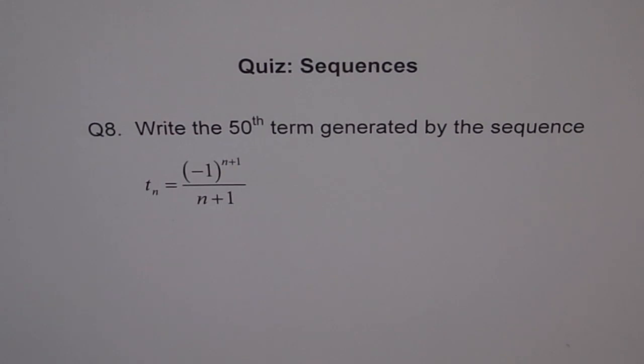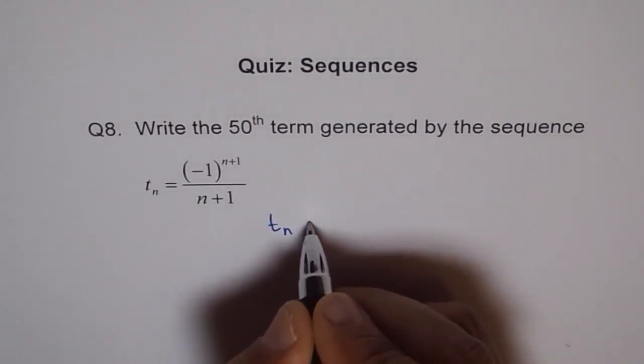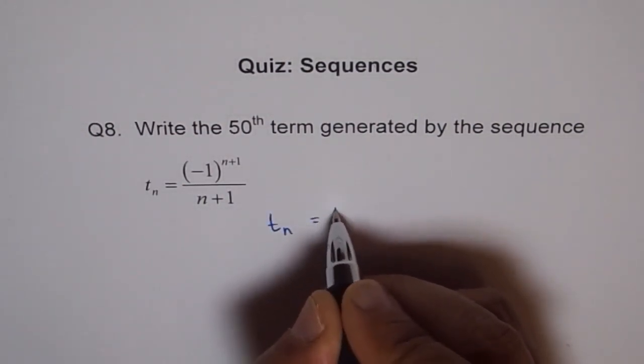Now here you have to simply put n as 50 and get your answer. So we get T_n which is 50. So let me write here T_50 first.